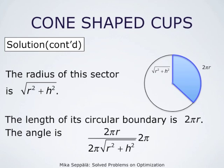Simplification happens because 2 pi appears twice in the numerator and once in the denominator, so it cancels out. We get that the angle of this sector is 2 times pi times r, divided by square root of r squared plus h squared.